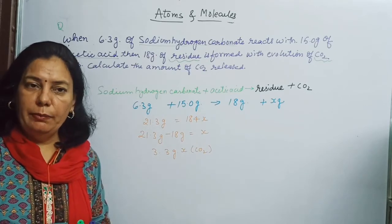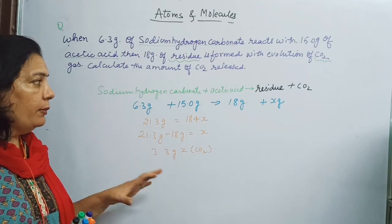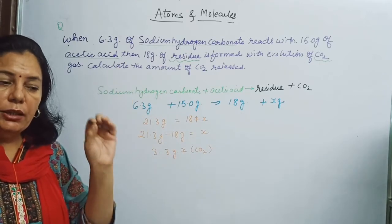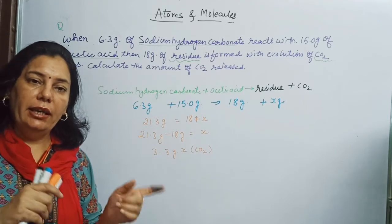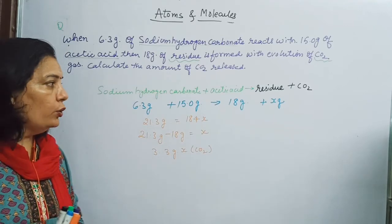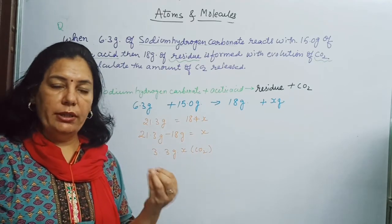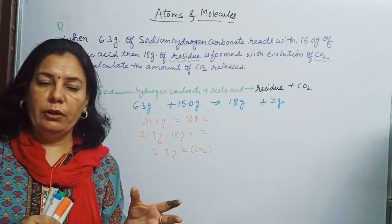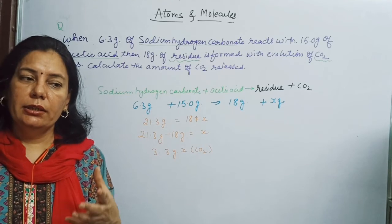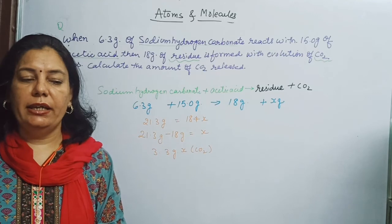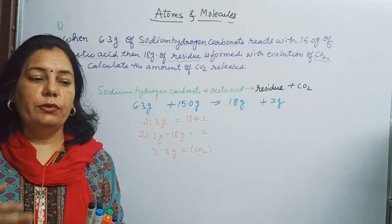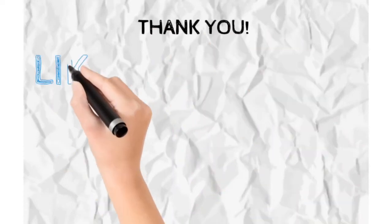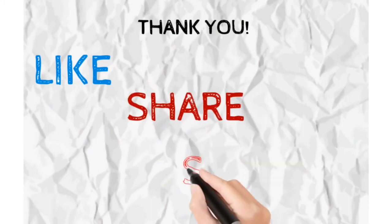So children, these are very simple questions based on the Law of Conservation of Mass. The basic concept to solve this numerical is to identify reactants and products accurately. I hope this concept is clear to you. During a chemical reaction, only rearrangement of atoms takes place — some bonds break and new bonds form. In our next lecture, we will know more about various laws such as the Law of Constant Proportion and the Law of Multiple Proportion. Thank you for watching. Do like, share, and subscribe the video if you liked it.